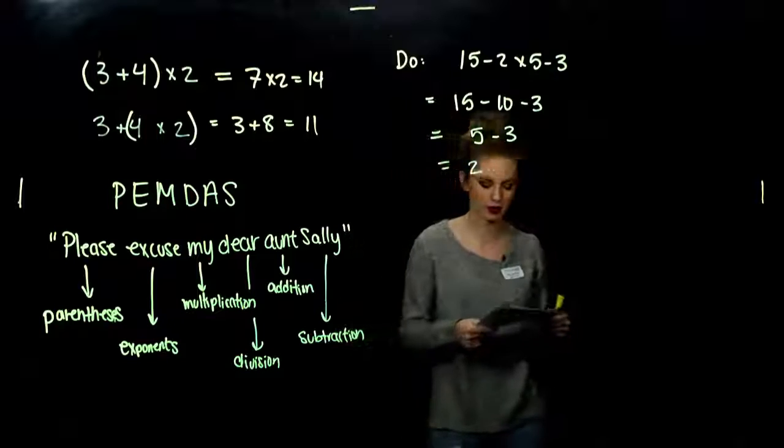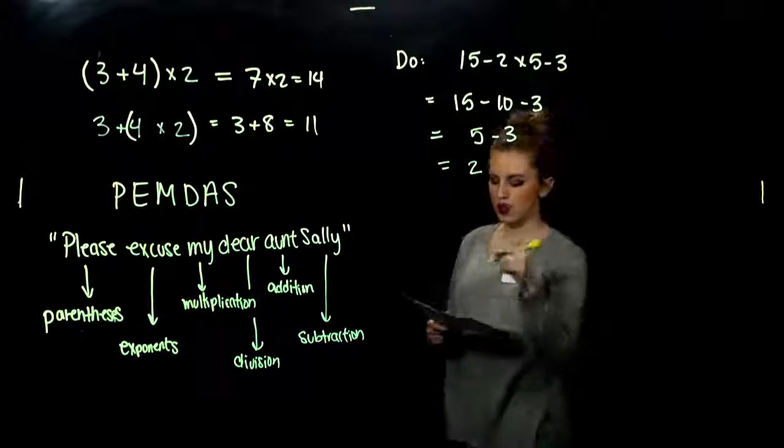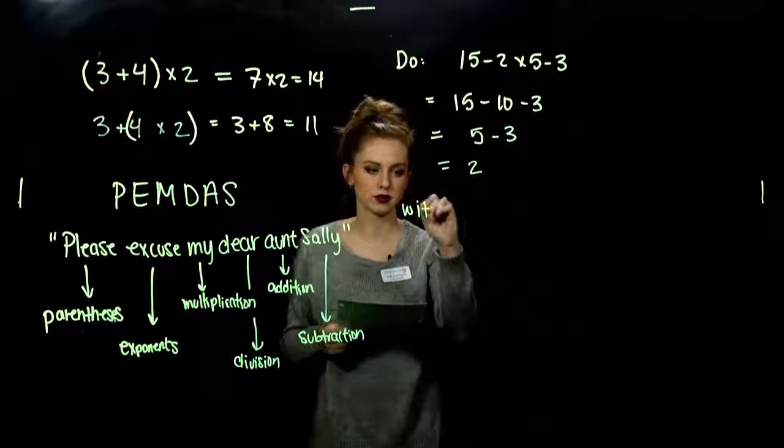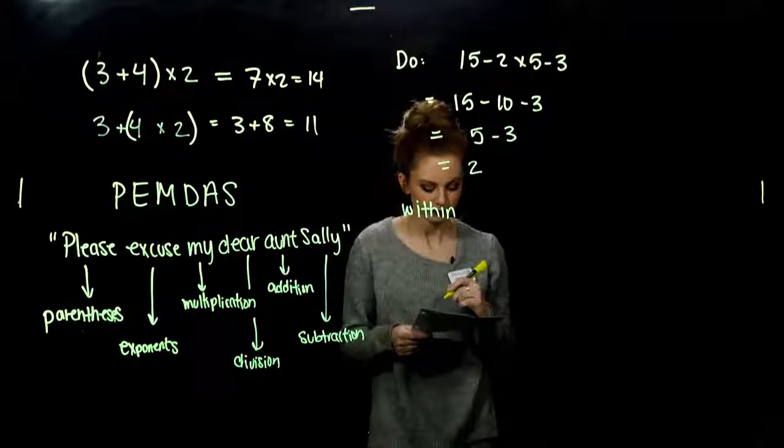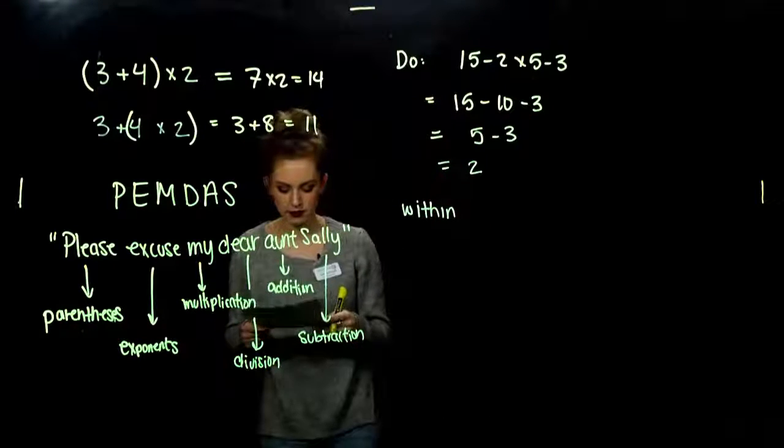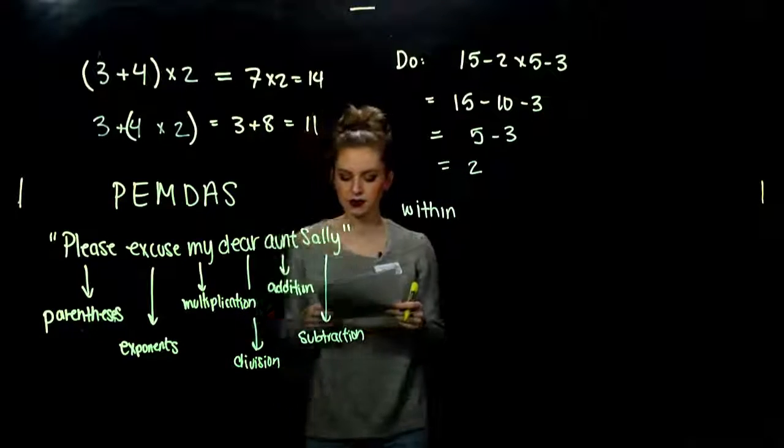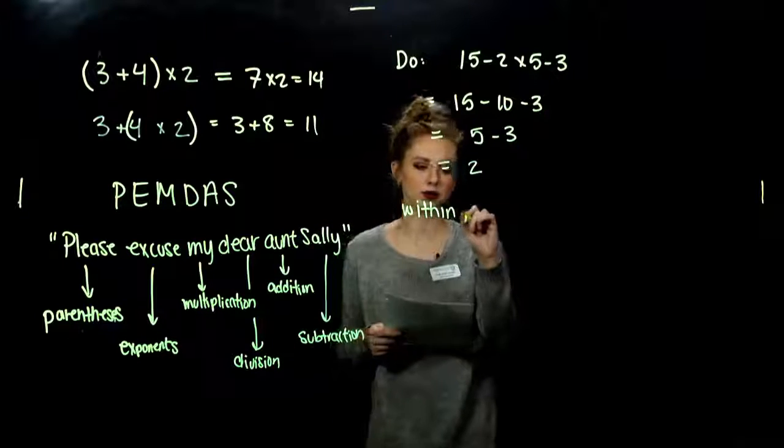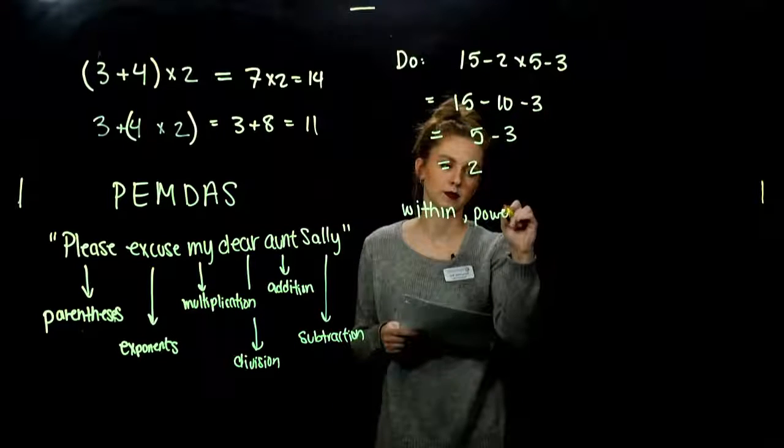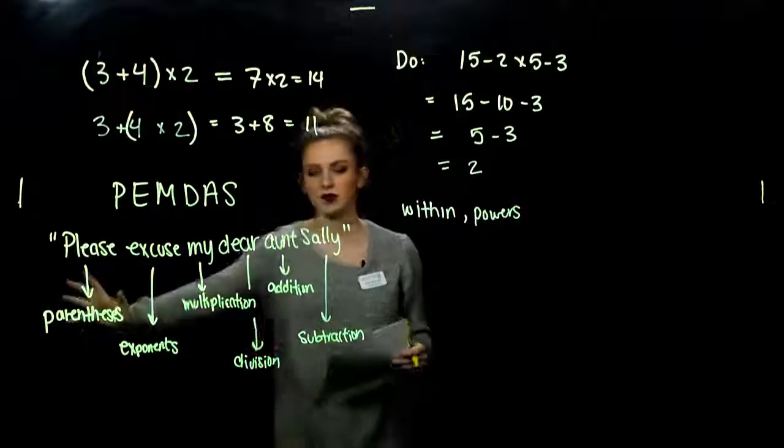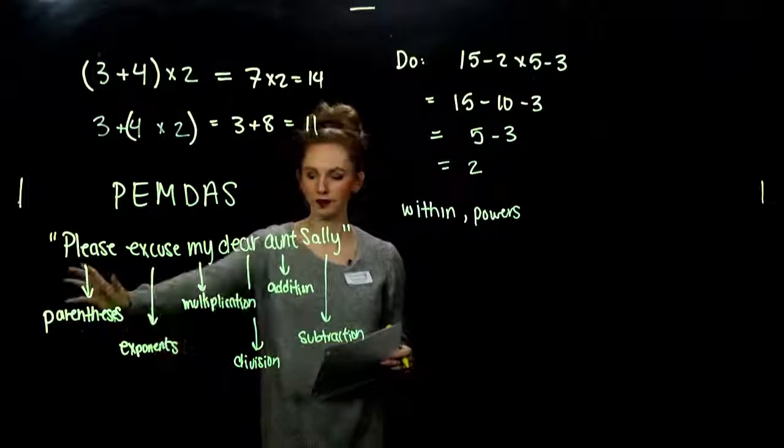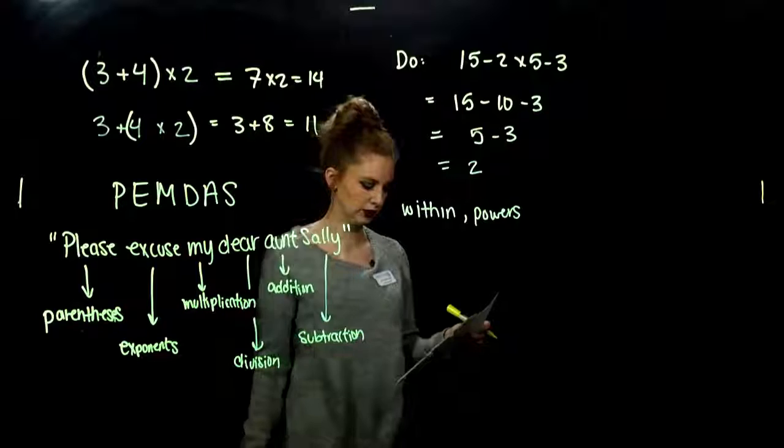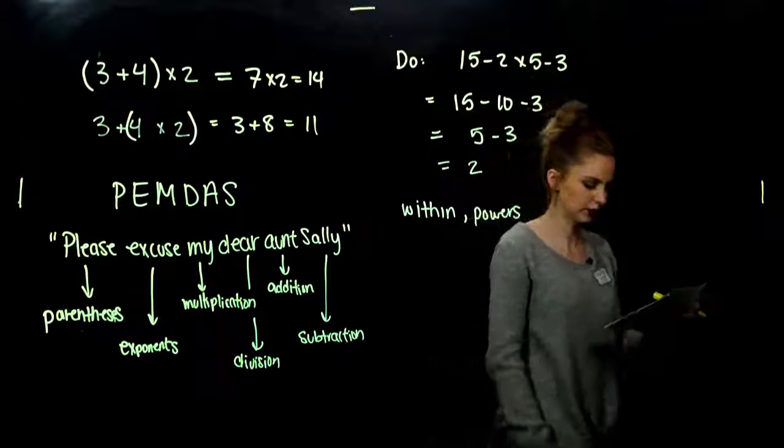So, always calculate within the parentheses first. When there are exponents and no parentheses, simplify powers first. Okay? So, if I don't have any grouping, work on the powers. If I do have grouping, work inside the groupings and just go down the line.